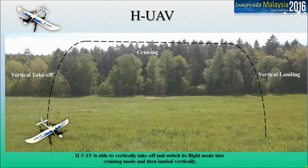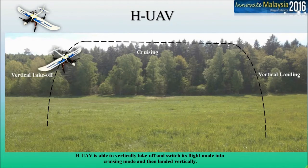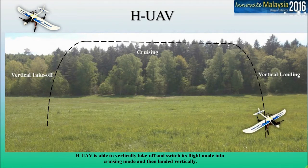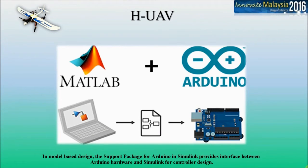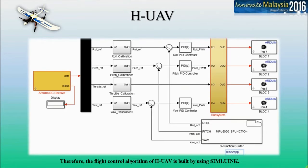HUAV is able to vertically take off, switch its flight mode into cruising mode, and then land vertically. This combined advantage makes it versatile in surveillance missions. In model-based design, the support package for Arduino and Simulink provides an interface between Arduino hardware and Simulink for controller design. Therefore, the flight control algorithm of HUAV is built using Simulink.